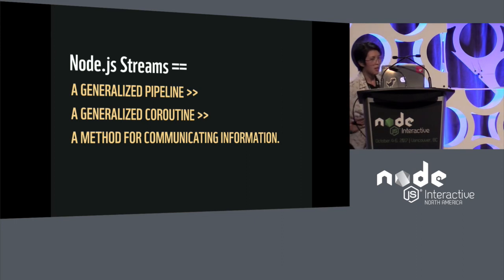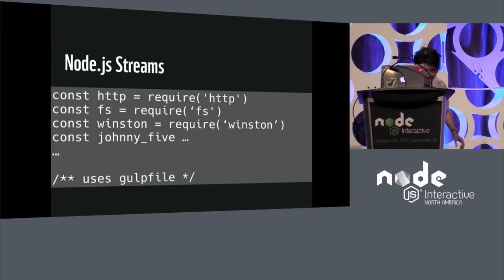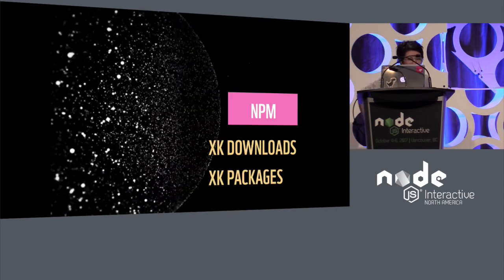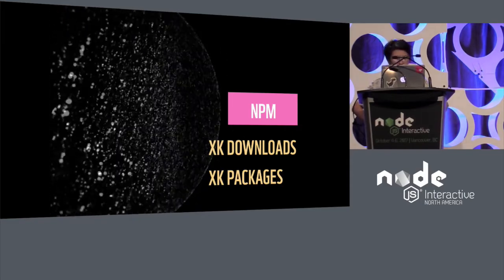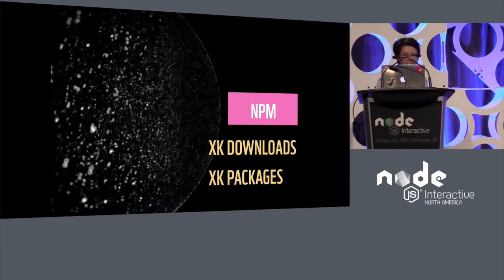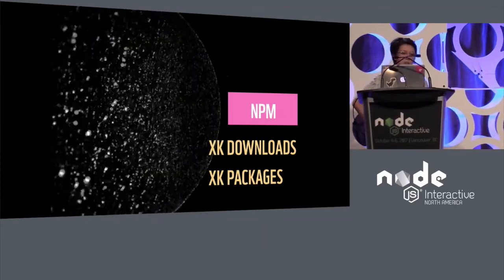Node.js streams — what are they? They're a generalized pipeline, which is kind of a generalized co-routine, which sits on a foundation for communicating information. We see Node.js streams in a very simple HTTP server. The HTTP module is, in itself, a stream. FS is a stream. Winston is becoming a stream. Johnny5 also runs on a Node port which has become a stream. Streams are everywhere, and Gulp also uses streams. While NPM boasts so many downloads and so many packages, what helps communicate between all these different libraries from different developers and minds? I place my bet that the answer is streams. And it's really not without the strides of these figures over the years that makes imagining Node's existing ecosystem and community of developers possible.